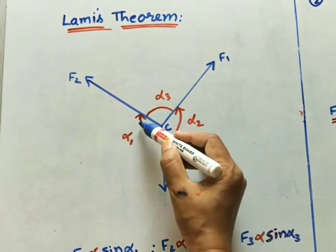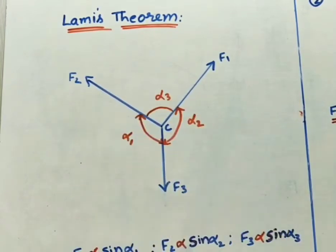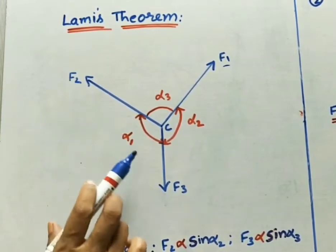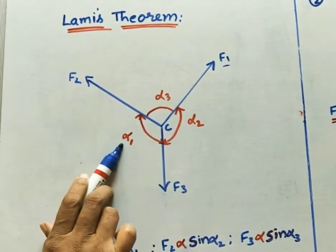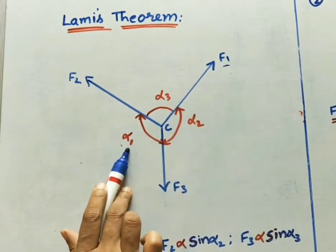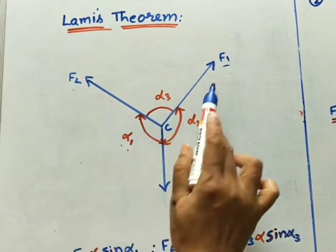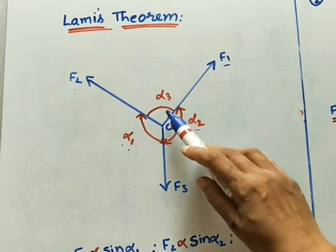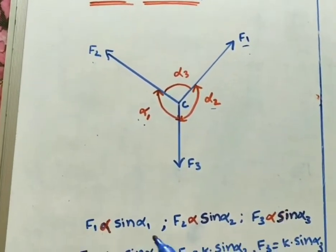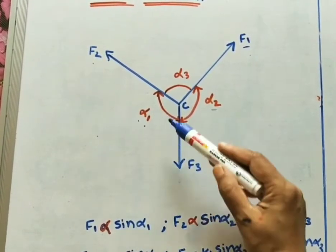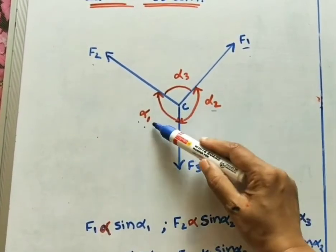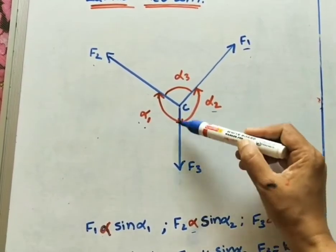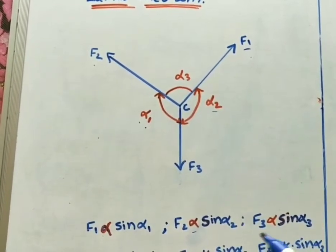According to Lami's Theorem, the magnitude of each force is proportional to the sine of the angle between the other two forces — that is, the opposite angle. So F1 is proportional to sine of alpha one, F2 is proportional to sine of alpha two, and F3 is proportional to sine of alpha three.